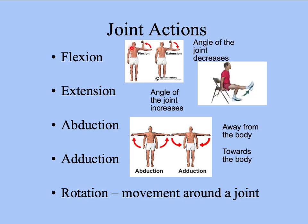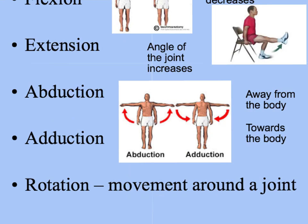Extension is where the angle of the joint increases. As you can see in the diagram, the angle is increasing as the lower leg extends at the knee joint. Abduction — you need to imagine there is a line running through the center of the body. Abduction is where you are taking away from the body, so the arm or leg moving away from the center line.